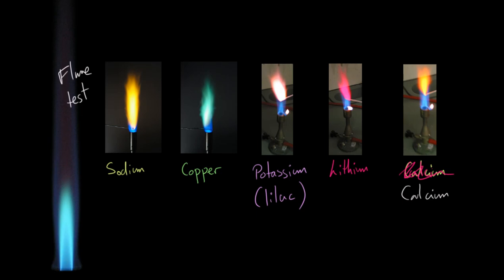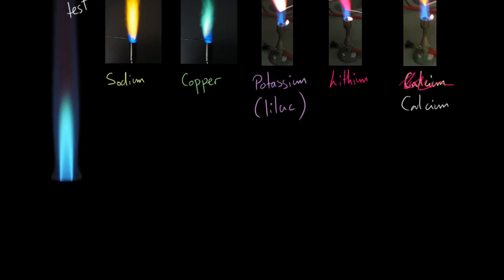Lithium will make a flame turn red, and calcium will make it turn a yellow-red color. Unfortunately the flame test does not work for every metal cation - you could put your sample into the flame and it doesn't go any of those colors, so you need to try a different approach.